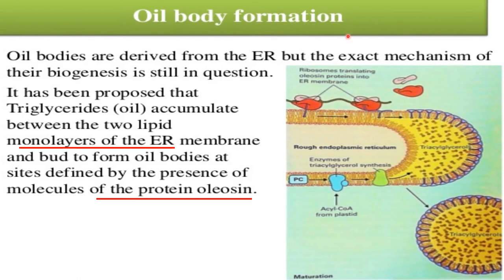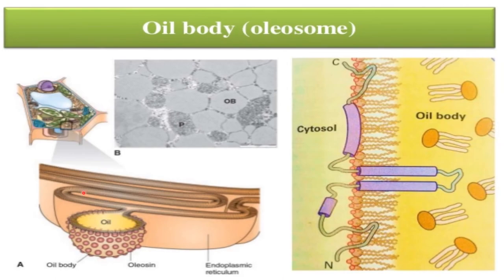Oil body formation. Oil bodies are derived from the endoplasmic reticulum, but the exact mechanism of their biogenesis is still in question. It has been proposed that triacylglyceride oil accumulates between the two lipid monolayers of the endoplasmic reticulum and buds to form an oil body at a site defined by the presence of the protein oleosin. This is how the oil body buds out from the endoplasmic reticulum.